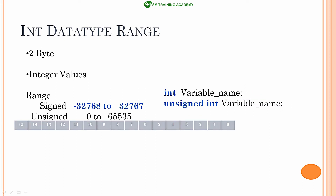Assume that these are the 16 bits of data available in a particular variable declared and defined in int datatype. It goes from the 0th bit, that is the LSB available in the rightmost position, to the 15th bit, that is the MSB in the leftmost position — a total of 16 bits, also called 2 bytes of data.